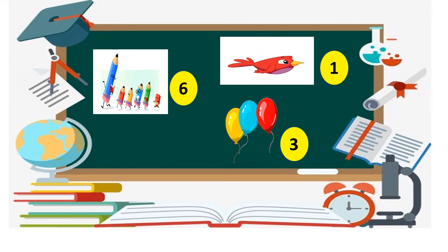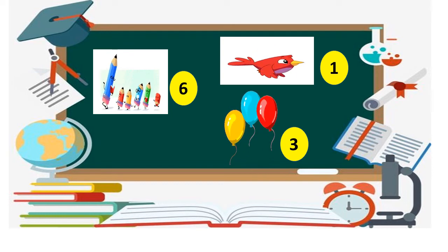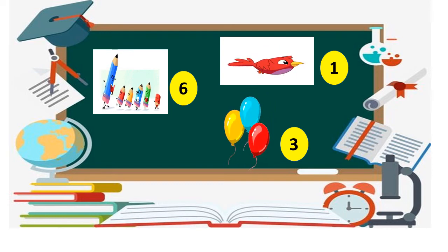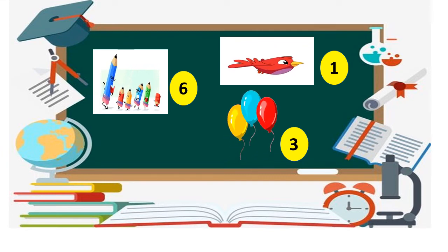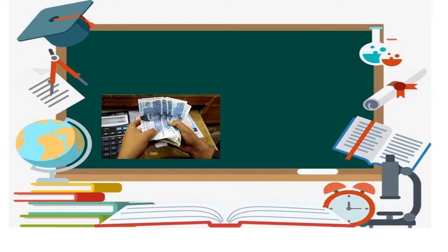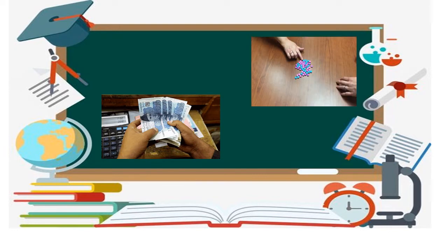Numbers one, two, three, four, five, six and so on are called counting numbers. We can count money, objects and different things with counting.